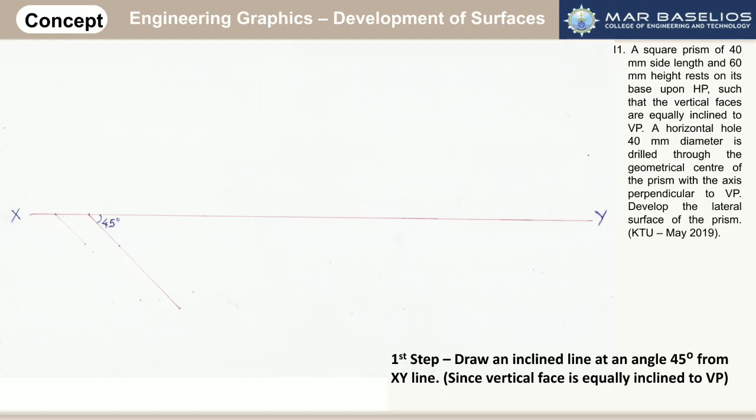In this question, we are asked to draw the development of a square prism whose vertical faces are equally inclined to VP. This square prism also has a horizontal hole which is drilled through the geometrical center of the prism with axis perpendicular to VP. We have to draw the development of the remaining portion.